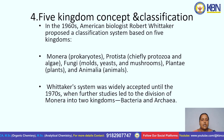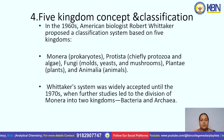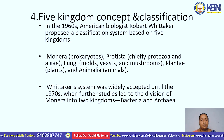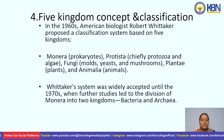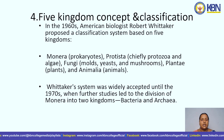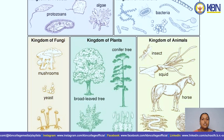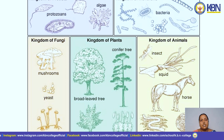The five kingdoms continue: Fungi, including molds, yeasts, and mushrooms; Plantae, plants; and Animalia, animals. Whittaker's system was widely accepted until the 1970s, when further studies led to the division of Monera into two kingdoms: bacteria and archaea. Here we have some diagrams shown.